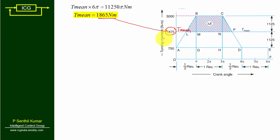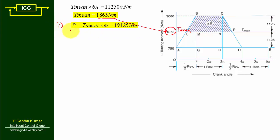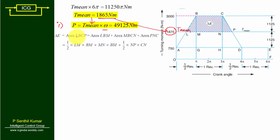Now we can hatch the ΔE portion. First, let us solve subdivision one: Power = T_mean × ω = 1875 × 26.2 = 49,125 Watts (approximately 49.1 kW). This is the answer for subdivision one.